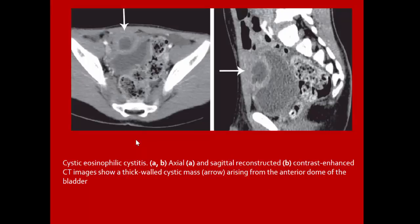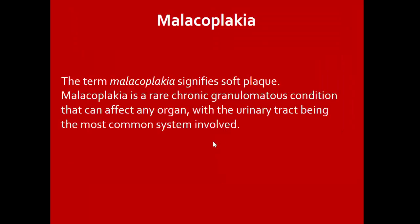Eosinophilic cystitis on CT: axial and sagittal reconstruction contrast-enhanced CT shows an equal cystic mass arising from the anterior dome of the bladder.